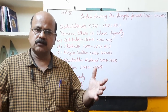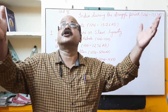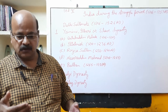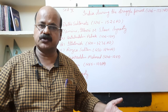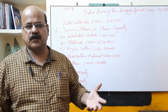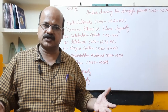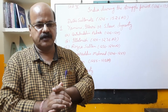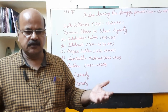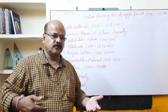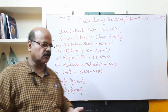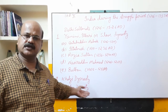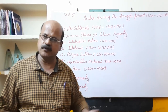Balban thought of the Sultan as the representative of God on earth, and therefore every person should follow the Sultan's command — that was the cause of his success. When he died, disturbances took place again. Out of many conflicts, Jalaluddin emerged victorious and established the Khalji dynasty. That we will study tomorrow. Bye.